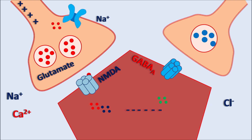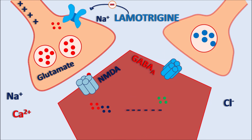Lamotrigine can block voltage-gated sodium channels on excitatory neurons, thereby inhibiting the release of glutamate. This drug can also potentiate the action of GABA at GABA-A receptors, thereby increasing the inhibitory response. In this way lamotrigine blocks excitation and increases inhibition. Apart from this, this drug can also act on 5-HT receptors, and all these mechanisms may be responsible for the anti-epileptic action.